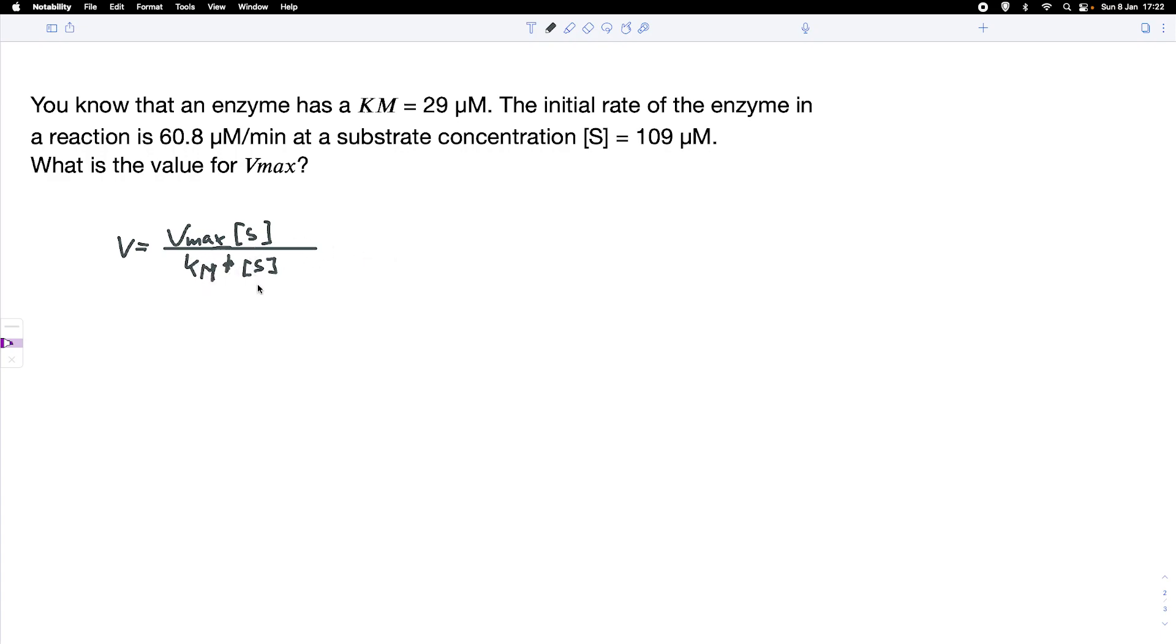What we now do is make Vmax the subject of that equation. We bring this term to that side, so we have V times Km plus the substrate concentration equals Vmax.